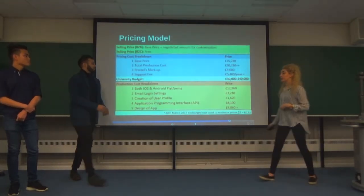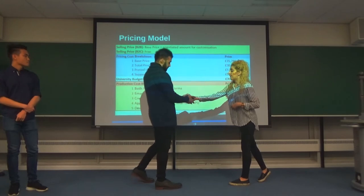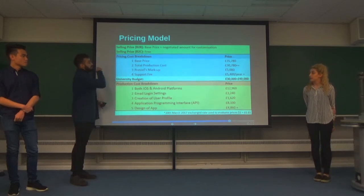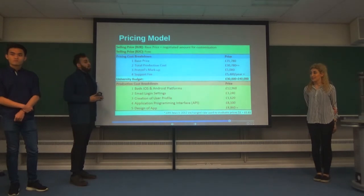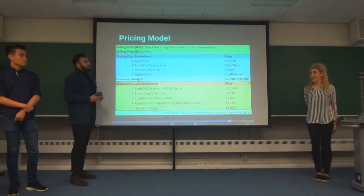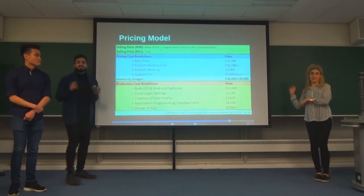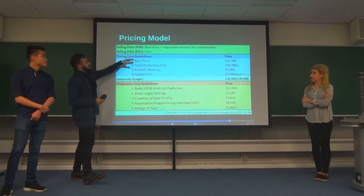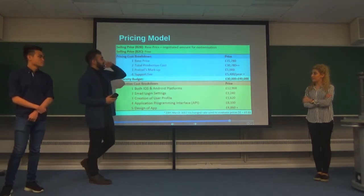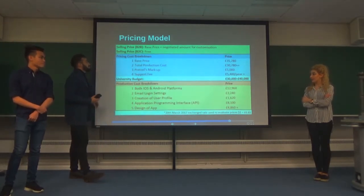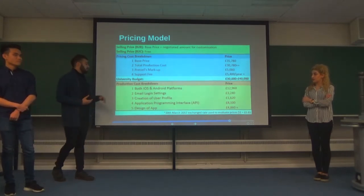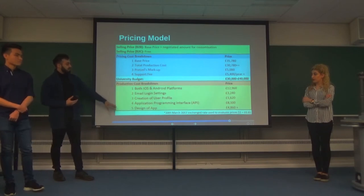Now moving on to Ben with the pricing model. So with the pricing model, the university's estimated budget is between £30,000 and £40,000. Breaking down that cost, with B2B it's the base price plus a negotiated amount for customization, while B2C would be free. To get all the features, the university will need to have all these components as well.